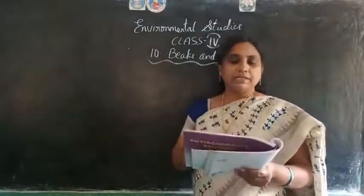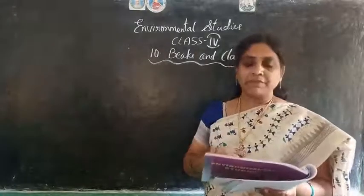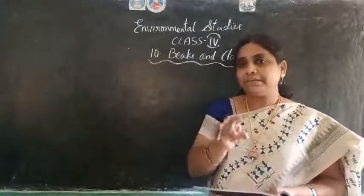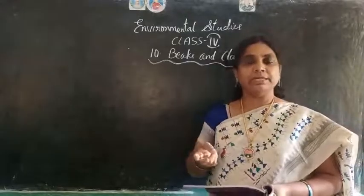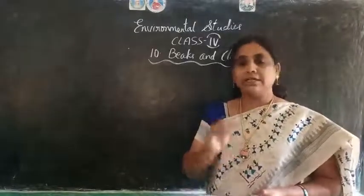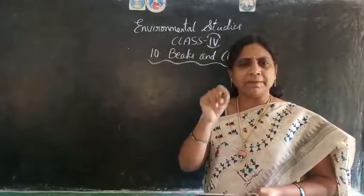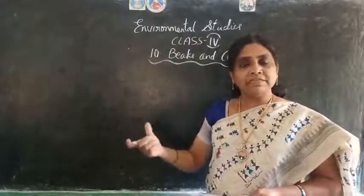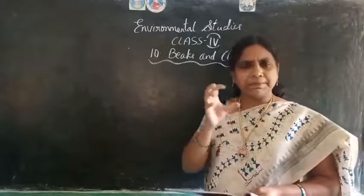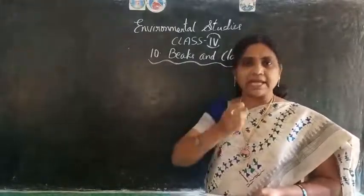The beak of a bird that eats nuts differs from the beak of a bird that eats flesh. If you compare two beaks, the beak of a bird eating nuts will be very different from one that eats flesh. It may be sharp, blunt, short, or curved.